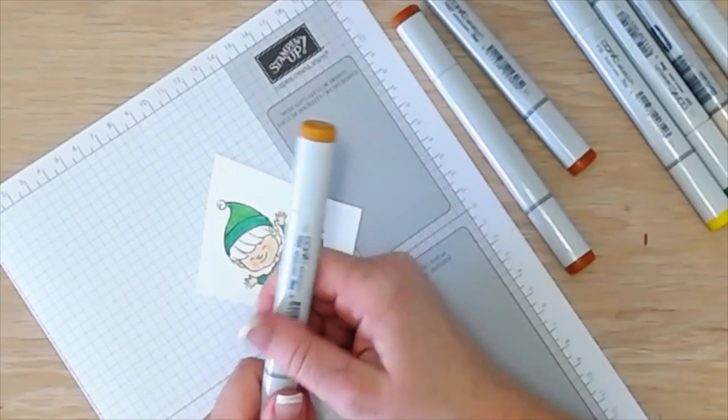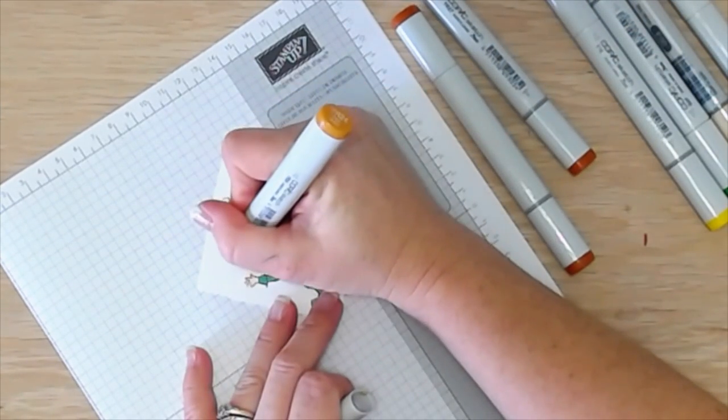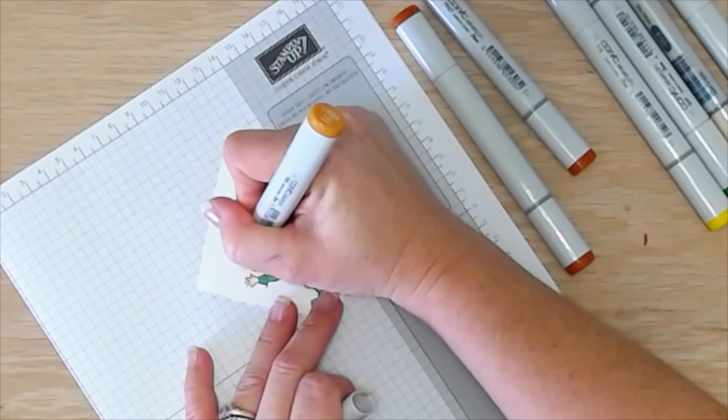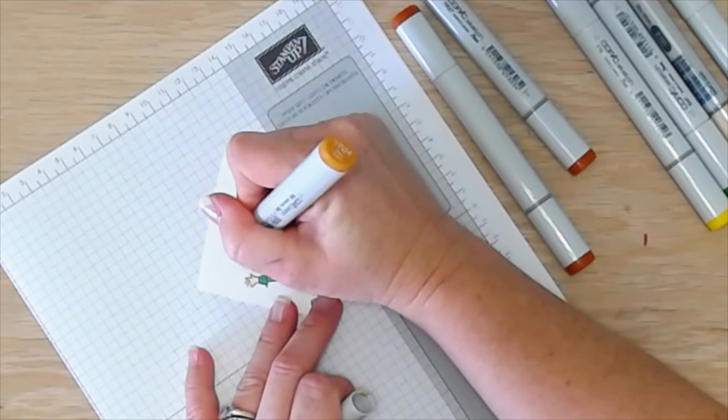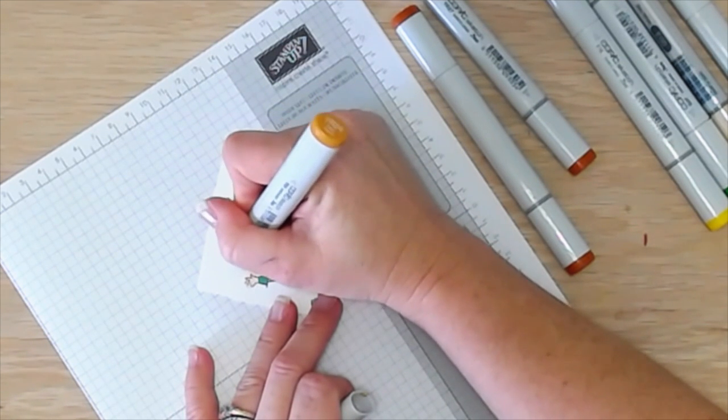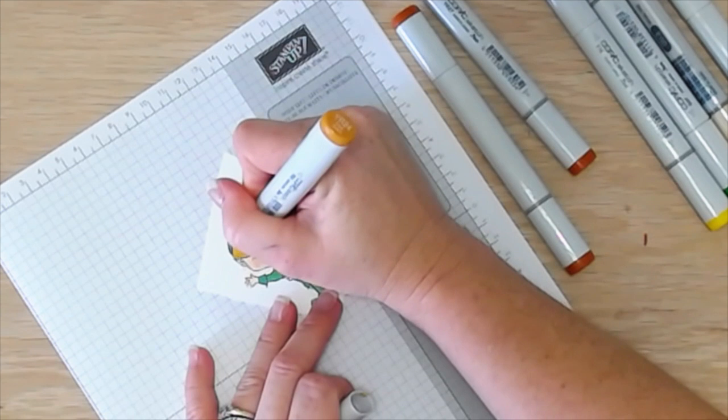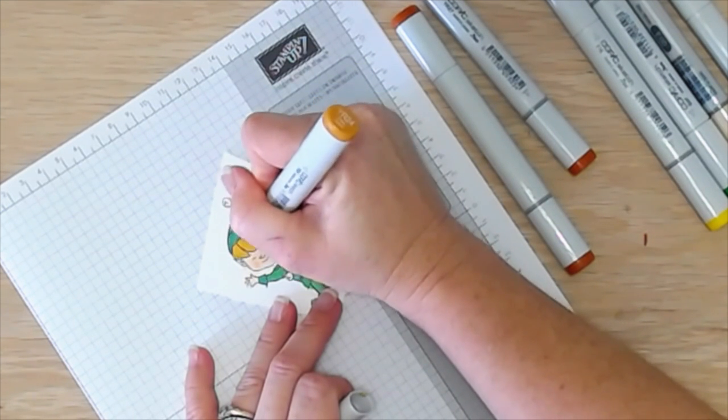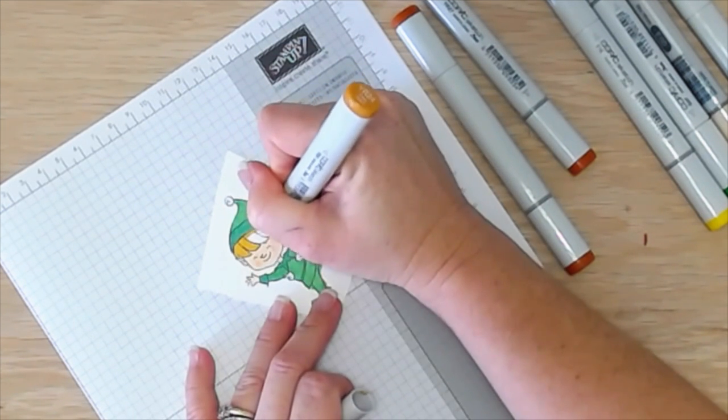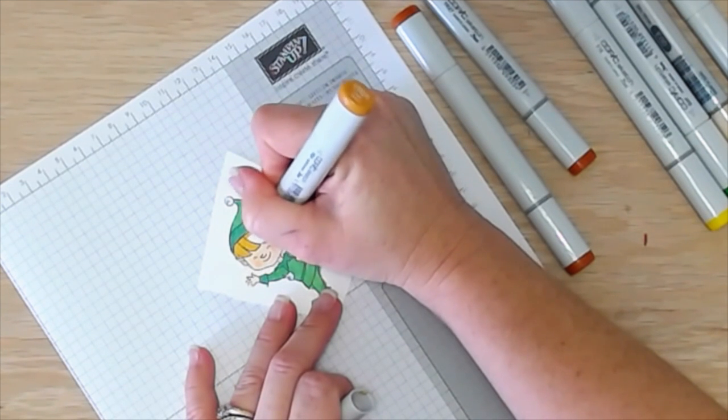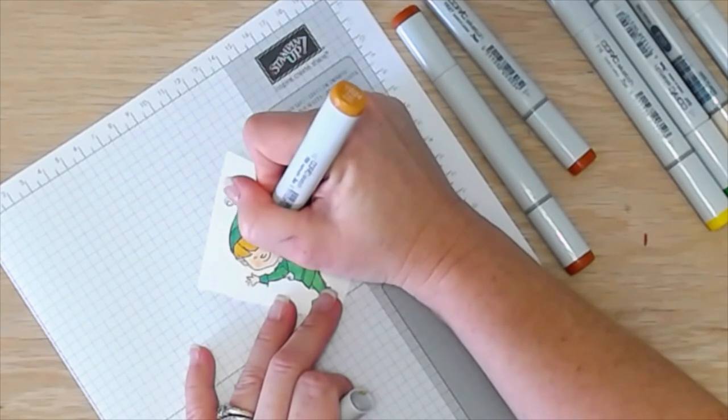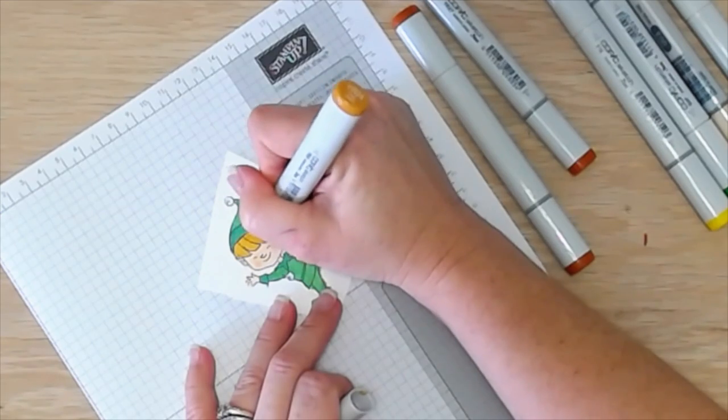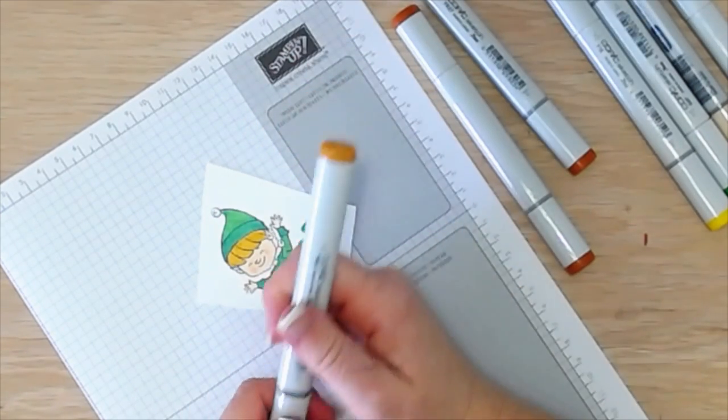And then for his hair, I'm just doing kind of like a caramely orange color hair. So I'm starting out with YR24. And I'm going to color all of his hair this color. And again, you can see I'm not being super careful with my coloring because I just don't think it's always necessary to have it perfect. I just don't worry about it.